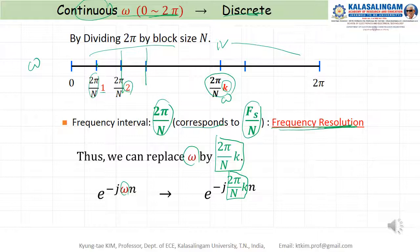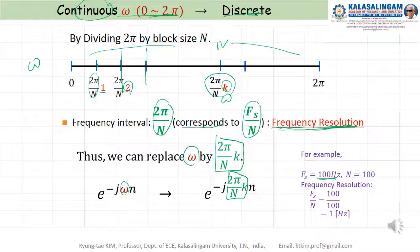For example, if F-s equals 100 Hz and N equals 100, then the frequency resolution means F-s divided by N equals 100 divided by 100 equals 1 Hz. Therefore, 1 Hz is the frequency resolution.